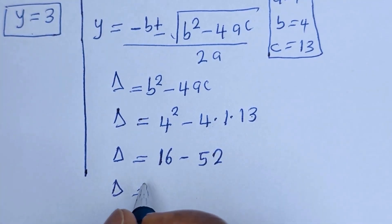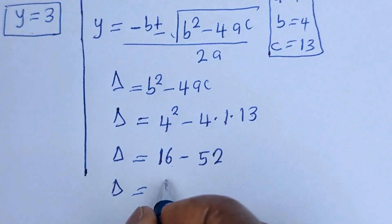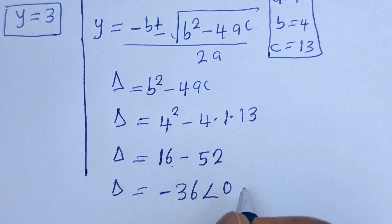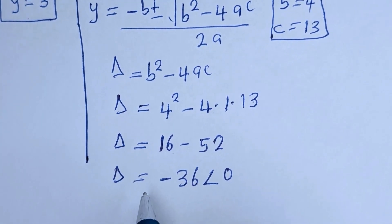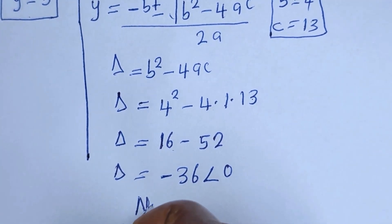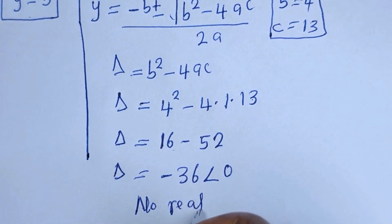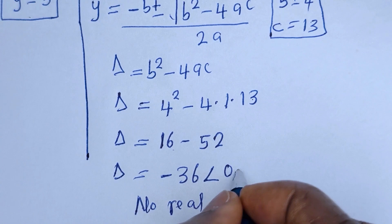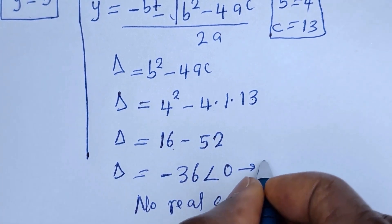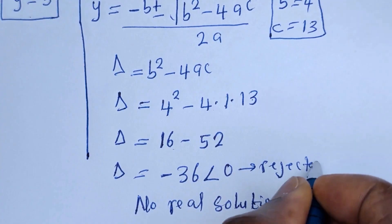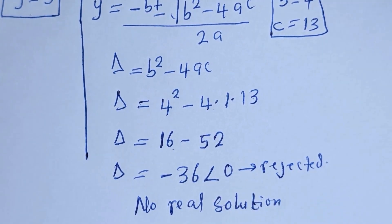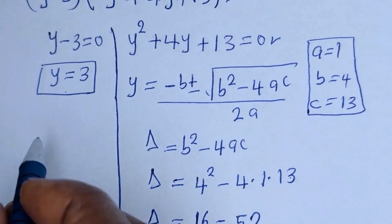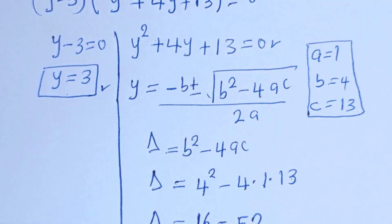So d equals 16 minus 52, that is minus 36, and this is less than 0. Since the discriminant is less than 0, we conclude that there is no real solution here, and it is rejected. The only real solution we have is y equals 3.